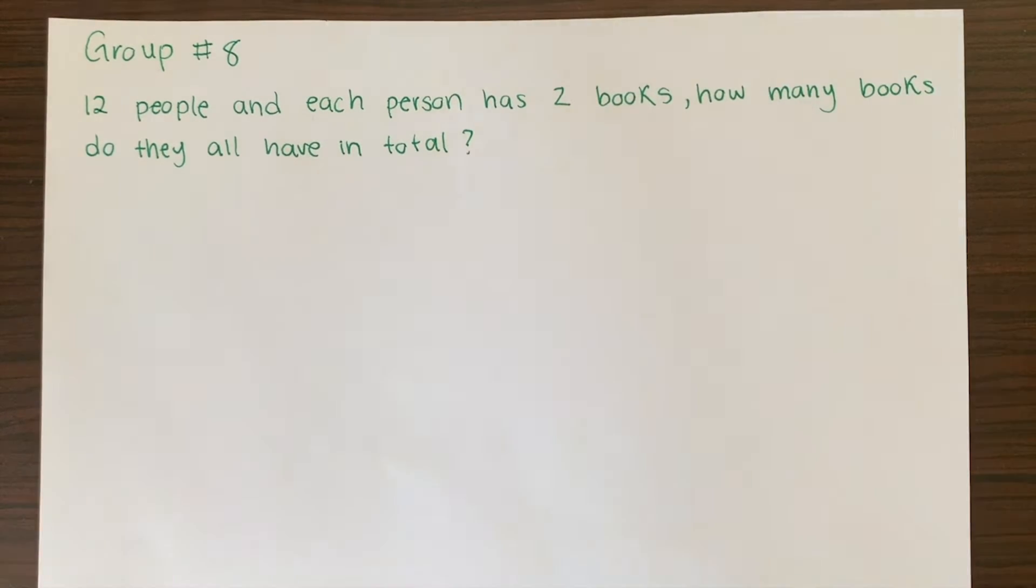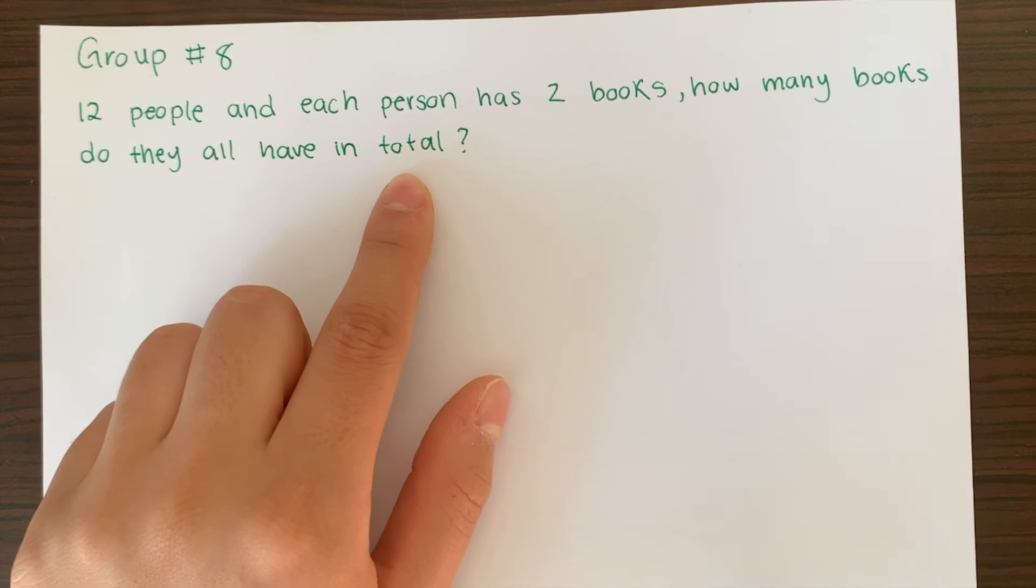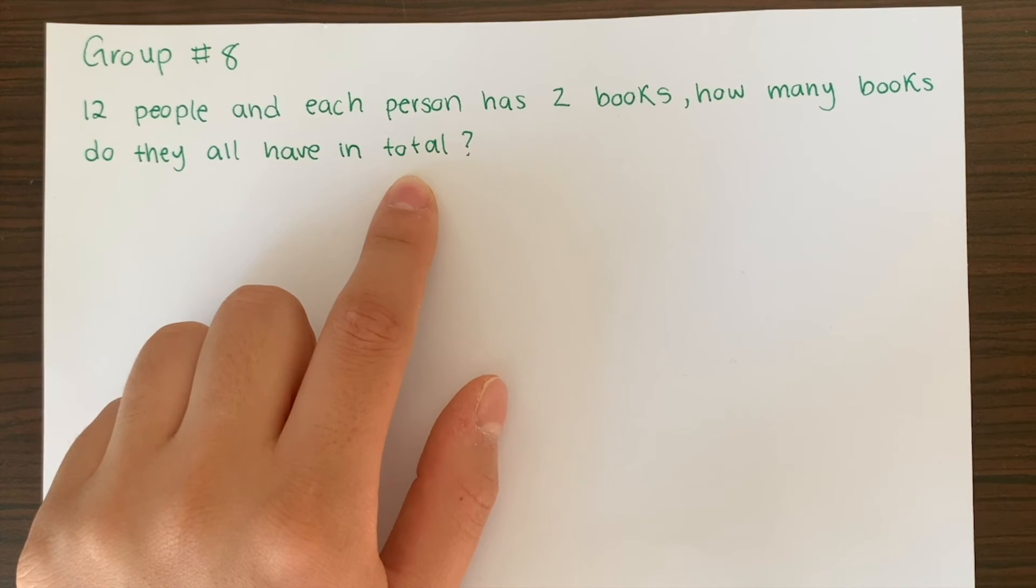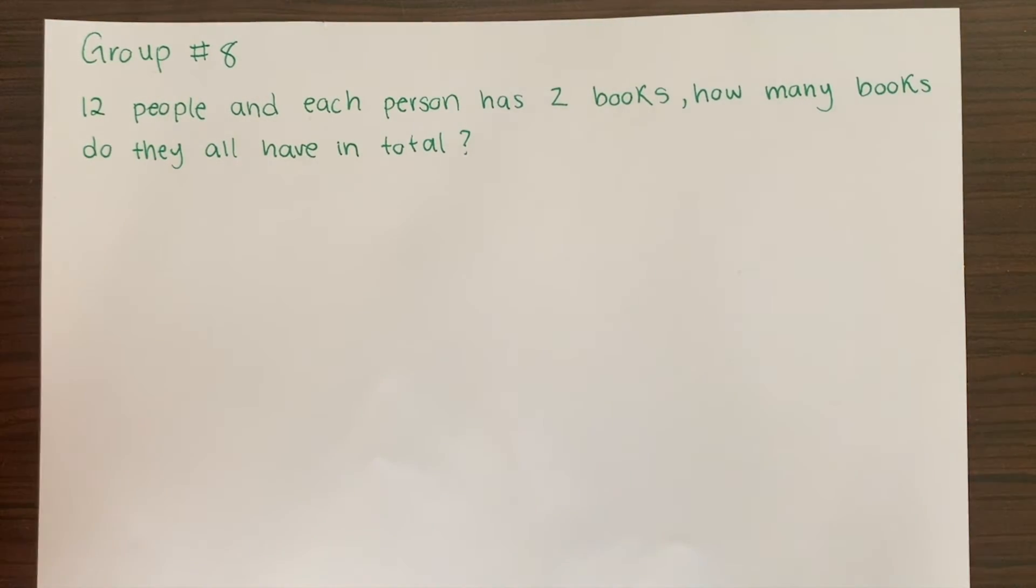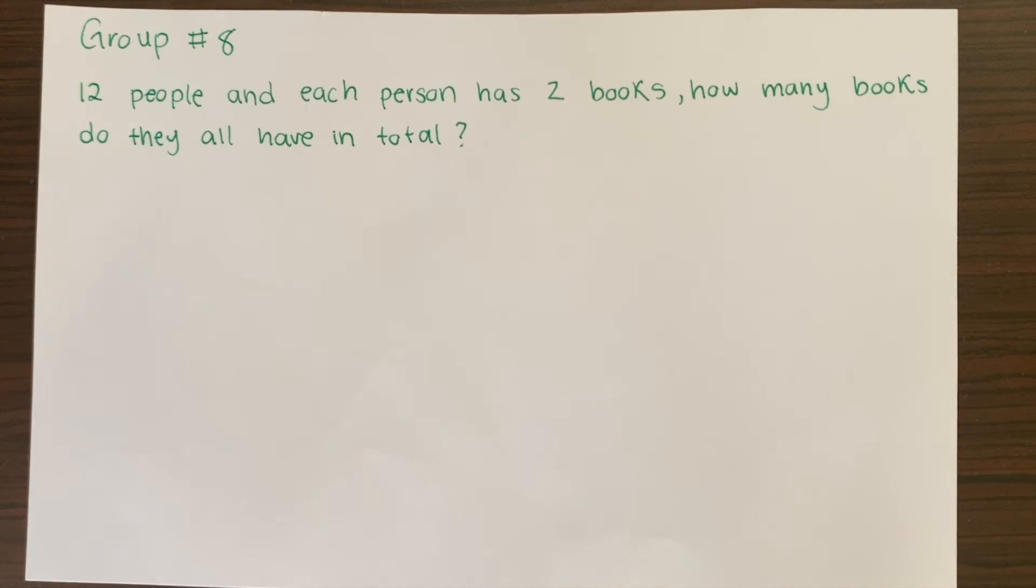Now for our third and final problem or group that we're trying to solve. Our problem says 12 people and each person has two books. How many books do they all have in total? It's asking how many books do they all have together. That's what total means. Total is just asking how many do they all have together. With this question, since we're working with a bigger number, it's really not convenient. It's not recommended that you do a drawing because then that would take you forever. So here we have to stick to just multiplying.